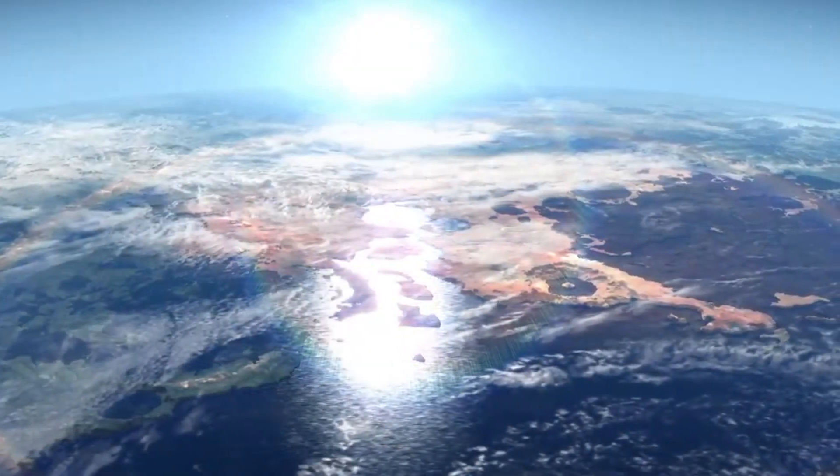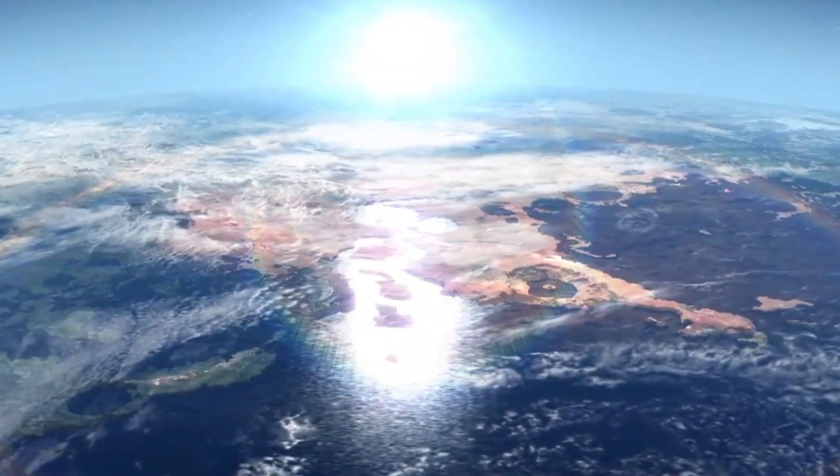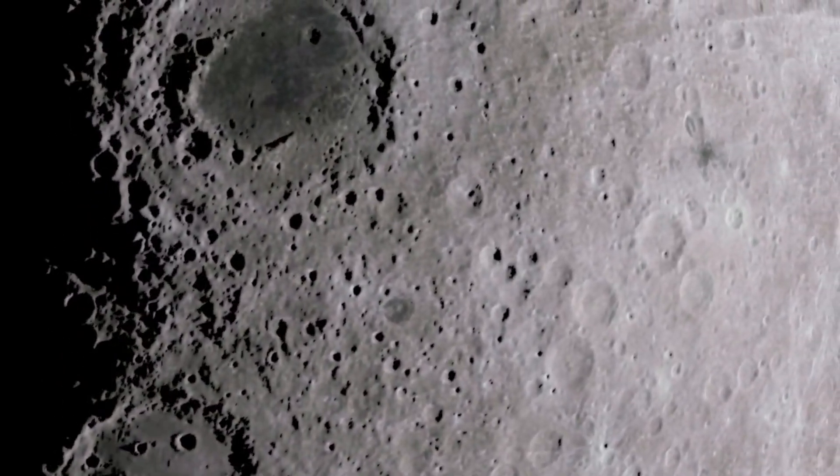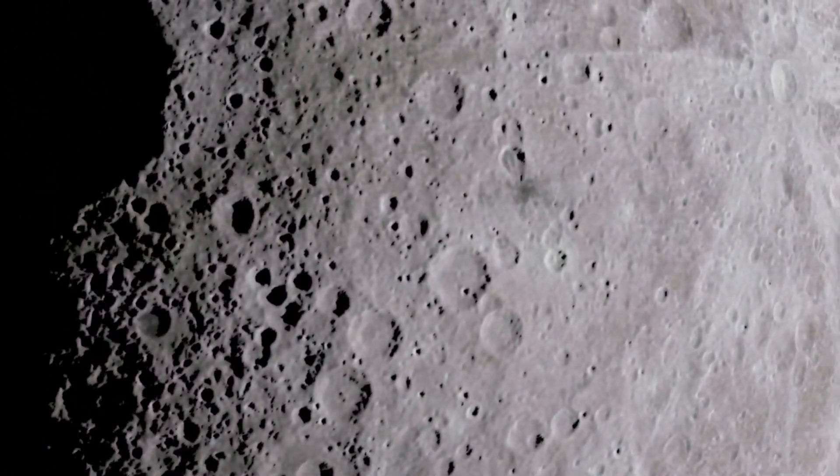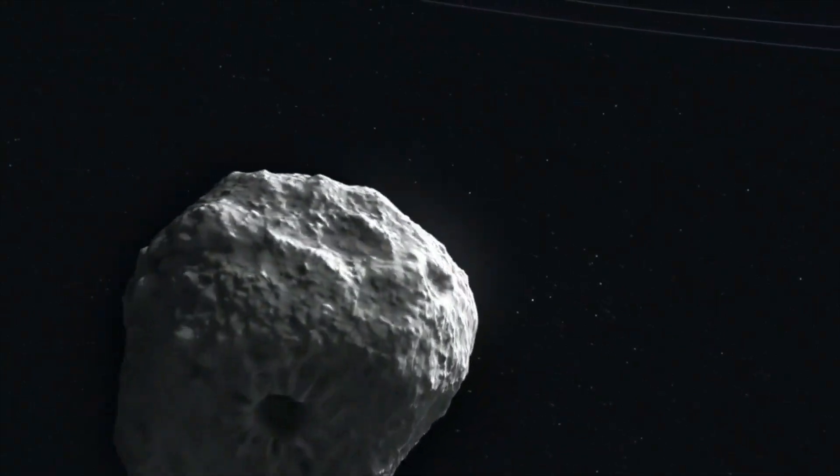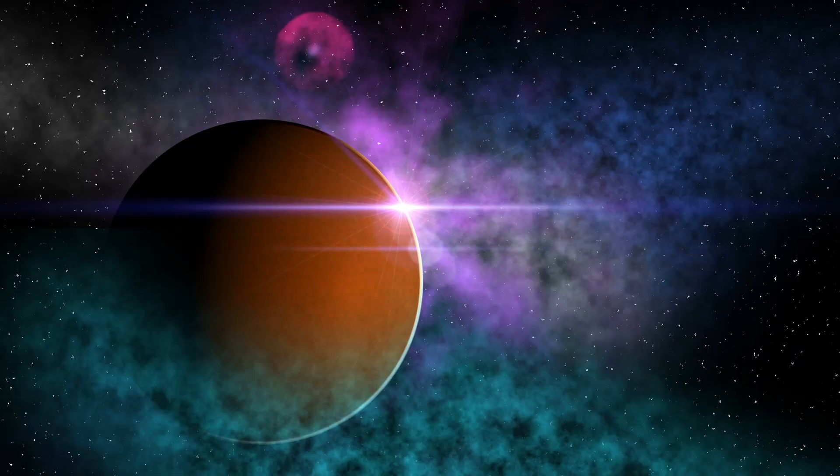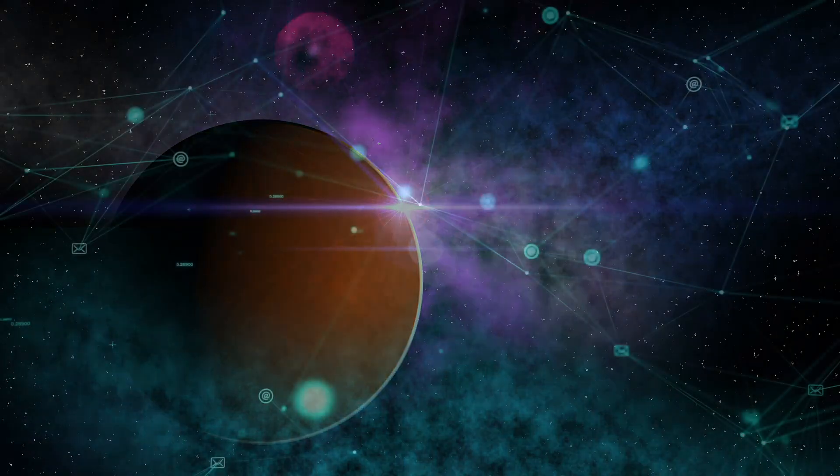But how did the so important water actually come to our planet? After all, in terms of history, for a long time the Earth was no different from the Moon or the other rocks in our solar system. With every discovery of similar planets in space, new theories emerge.